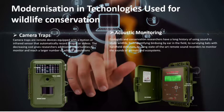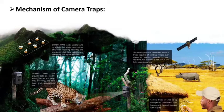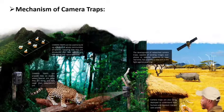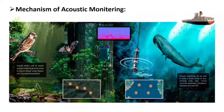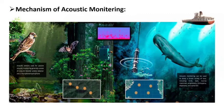Regarding the mechanisms of camera traps: they can provide data on exactly where species are, what they are doing, how large their populations are, and how species are interacting over space and time. Networked camera traps capable of sending images over phone or satellite networks in near real-time provide a new tool in the fight against poaching. For acoustic monitoring, acoustic sensors consist of a sound recorder, a detector, and a microphone. Acoustic monitoring can study a broad variety of taxa including birds, bats, marine mammals, amphibians, orthoptera, elephants, and some fish.